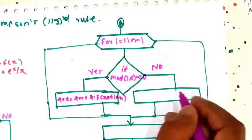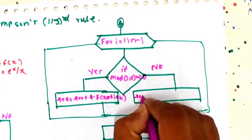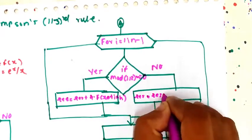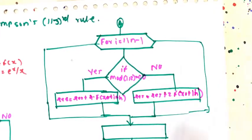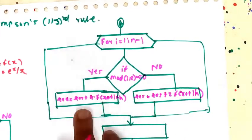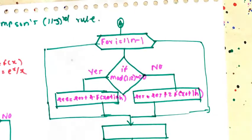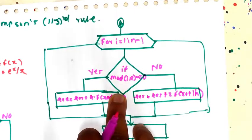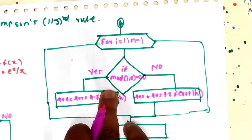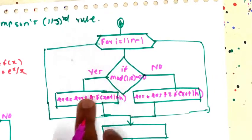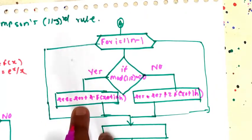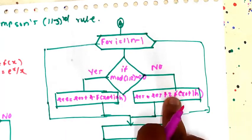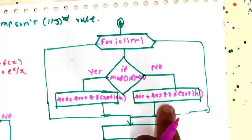If no — meaning i is a multiple of 2 — then RES becomes RES plus 2 times f of (x0 plus i times h). So depending on the value of i from 1 to n minus 1, you check whether the term is a multiple of 2 or not and calculate the result accordingly.